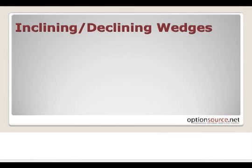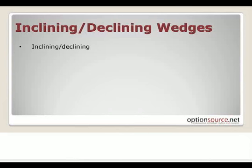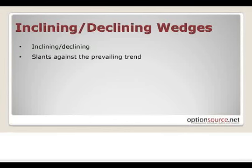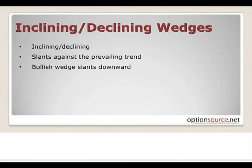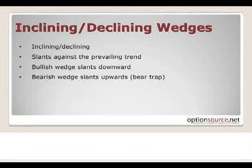The pattern we're going to look at tonight is the inclining and declining wedge. This pattern has been quite interesting because it's something you've seen all over the markets as of late, as prices and all the major markets have made their moves to the downside. You've seen a lot of these wedges forming. A bullish wedge will slant downwards; a bearish wedge is going to slant upwards. They actually quite often call bearish wedges bear traps.